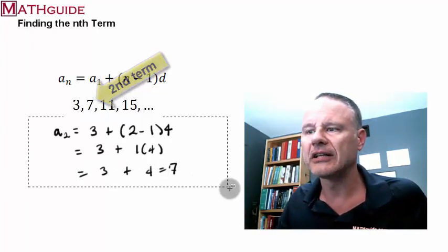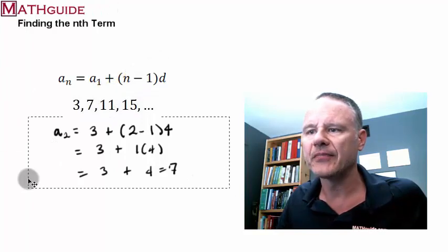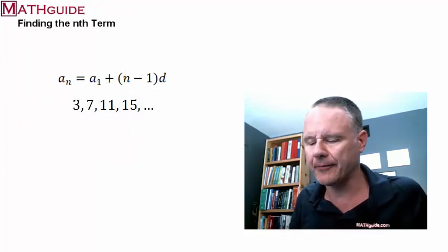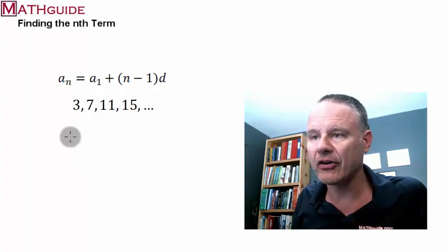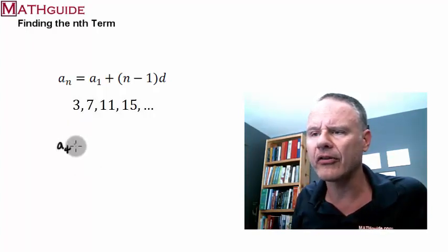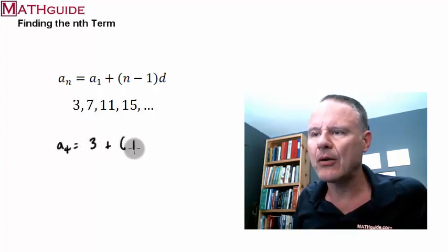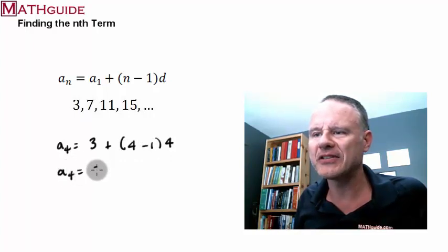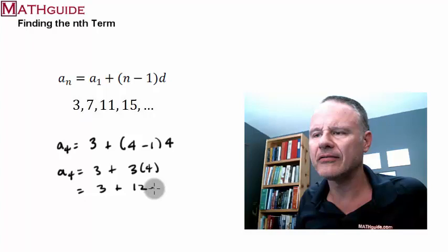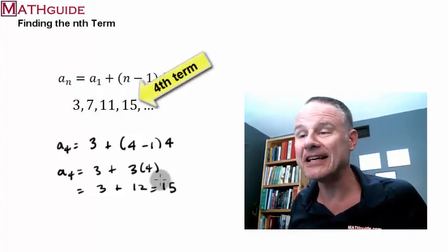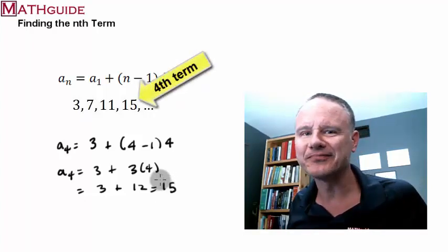Let's try this again. Let's say we wanted to find the fourth term. We already know the fourth term, but you would take the first term. And since I want to find the fourth term, n is 4, and the common difference is still 4. We could see the fourth term is going to be 3 plus 3 times 4. So we know that that's 3 plus 12 or 15. That's the fourth term.